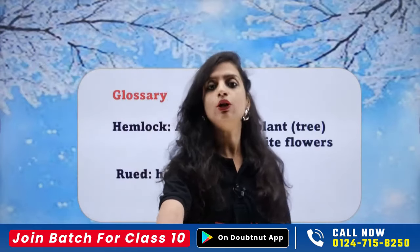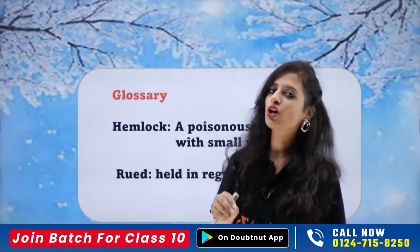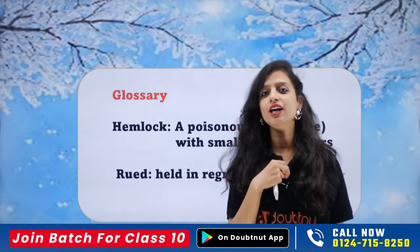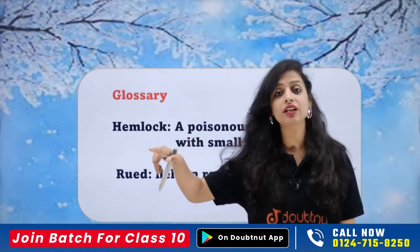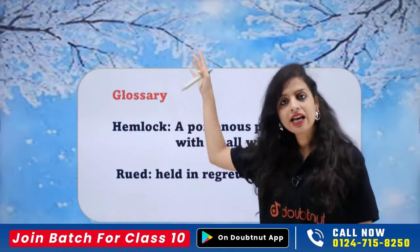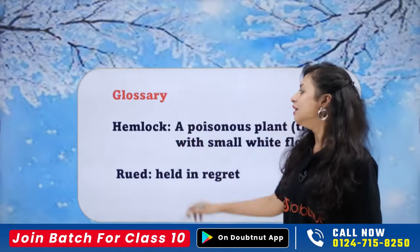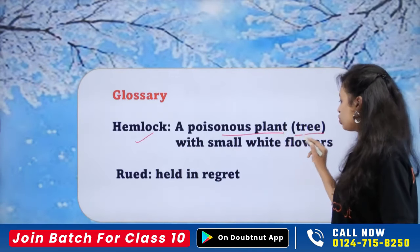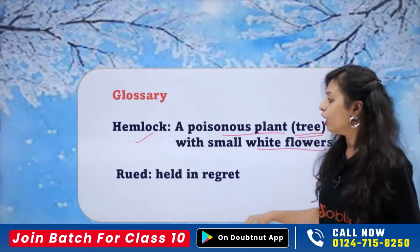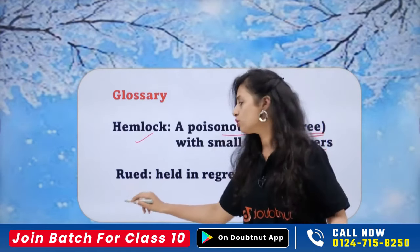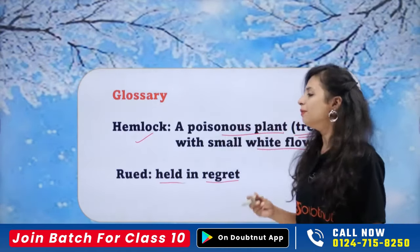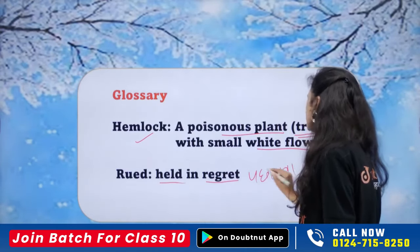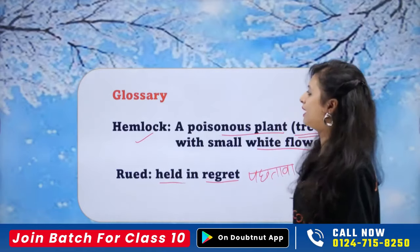I've also brought the glossary for you. The hemlock is a poisonous plant — it can be called a tree — with white flowers. And the word 'rued', which I had also underlined, means 'held in regret' — to feel regret or remorse about something. It means feeling penance, going on a guilt trip. That's what that word means.